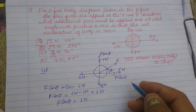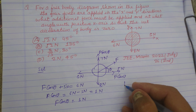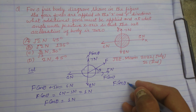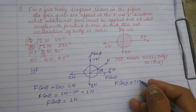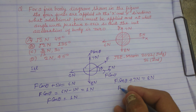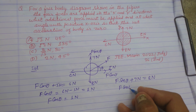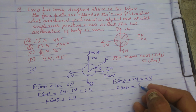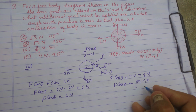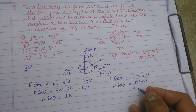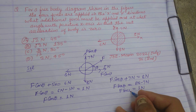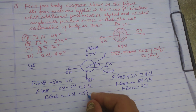Upward force equals downward force. So F sin theta equals 8 newton minus 7 newton, which is 1 newton. Therefore F sin theta equals 1 newton.